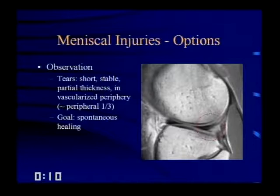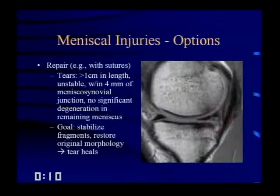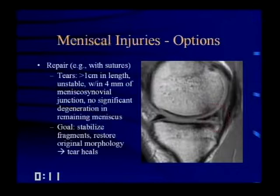The goal with short, stable tears in the vascularized periphery is that they may spontaneously heal, particularly if partial thickness. If a tear is in the vascularized periphery but more complex-looking, the orthopedic surgeon may choose repair — particularly if greater than a centimeter in length with no significant degeneration in the remaining meniscus. The goal is to stabilize the fragments and restore the original meniscal morphology so the tear can heal with the help of sutures.